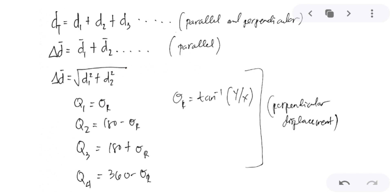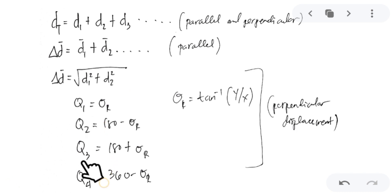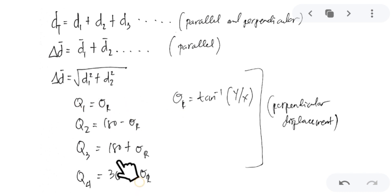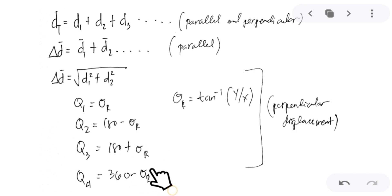For parallel vectors, you just add the individual displacements. For perpendicular vectors, to find the displacement you use the Pythagorean theorem: displacement equals the square root of D1 squared plus D2 squared. You also need to find its location on the Cartesian plane — quadrant 1, 2, 3, or 4 — to find the reference angle or direction. For quadrant 1, the direction equals the reference angle. For quadrant 2, it is 180 minus the reference angle. For quadrant 3, it is 180 plus the reference angle. For quadrant 4, it is 360 minus the reference angle.